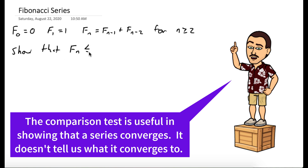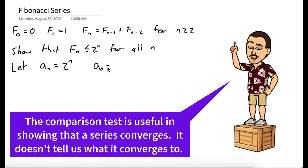Let's show that the nth Fibonacci is less than or equal to 2 to the n for all n. Since Fibonacci numbers are always greater than or equal to 0, we can use the comparison test to show our series converges. We'll let aₙ equal 2 to the n, so a₀ equals 1 and a₁ equals 2. It's not hard to show that aₙ equals aₙ₋₁ plus 2 times aₙ₋₂.